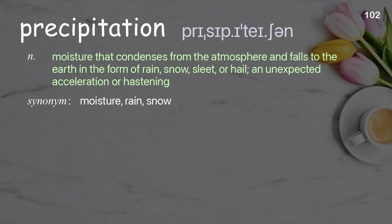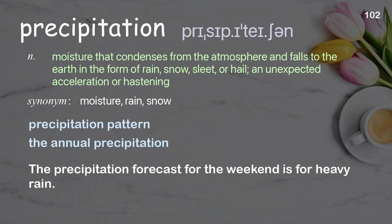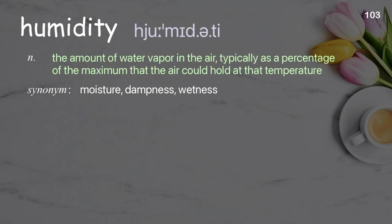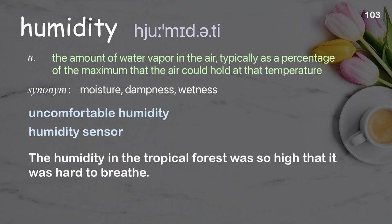Precipitation: moisture that condenses from the atmosphere and falls to the earth in the form of rain, snow, sleet, or hail; an unexpected acceleration or hastening. Examples: precipitation pattern, the annual precipitation. The precipitation forecast for the weekend is for heavy rain. Humidity: the amount of water vapor in the air, typically as a percentage of the maximum that the air could hold at that temperature. Examples: uncomfortable humidity, humidity sensor. The humidity in the tropical forest was so high that it was hard to breathe.